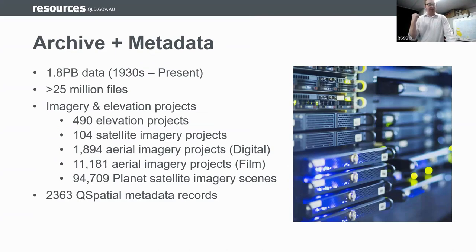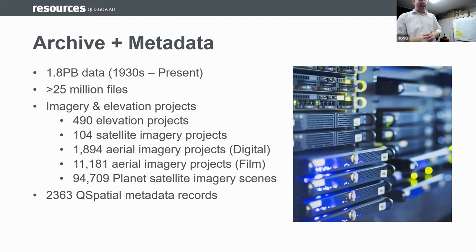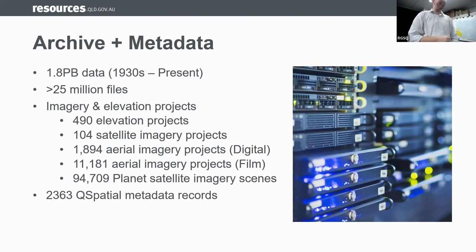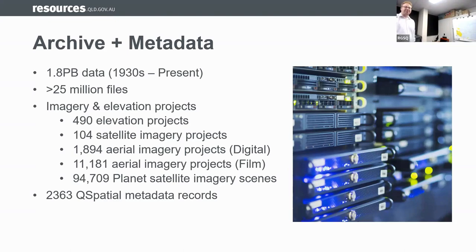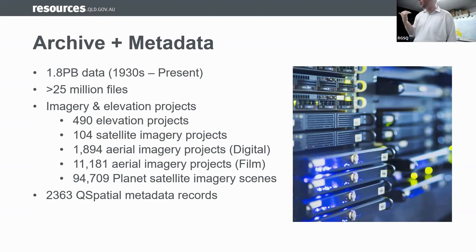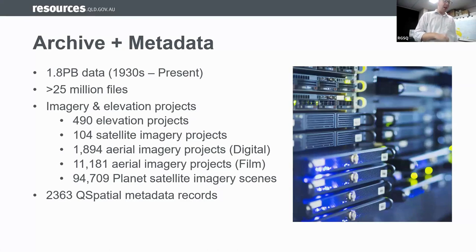Our entire archive is sitting at around 1.8 petabytes of data. To put that in context, your laptop might have a terabyte hard drive — a petabyte is 1,024 of those. When I joined the team in 2018 we had 800 terabytes; in six years we've added nearly a petabyte of new information. This breaks down across more than 25 million files, 490 elevation projects, 104 satellite projects, over 1,900 aerial imagery projects, nearly 12,000 film projects, and more than 94,000 satellite scenes from Planet since 2016.